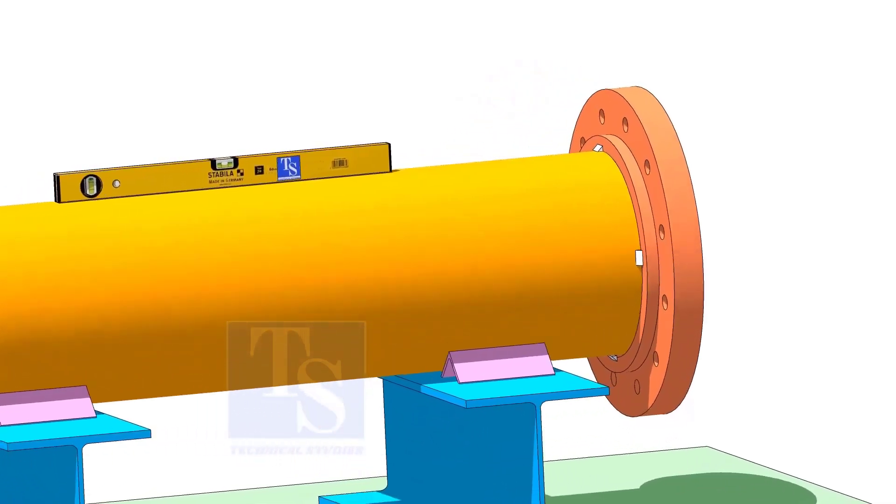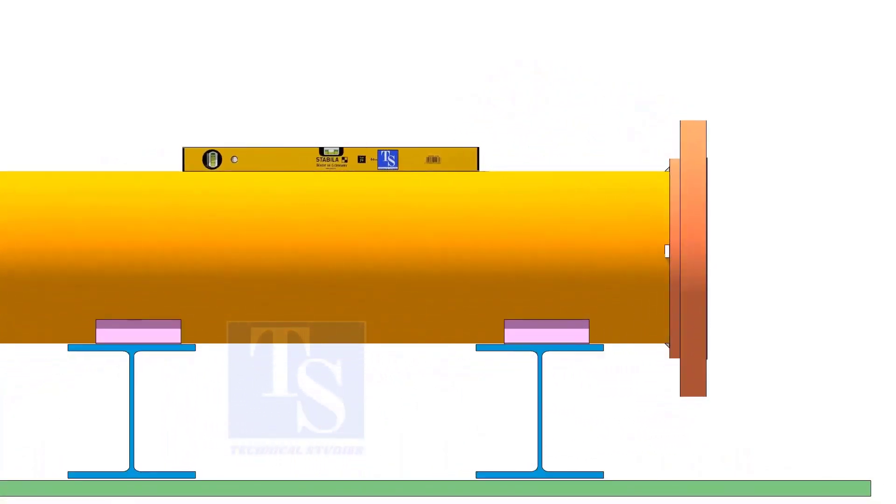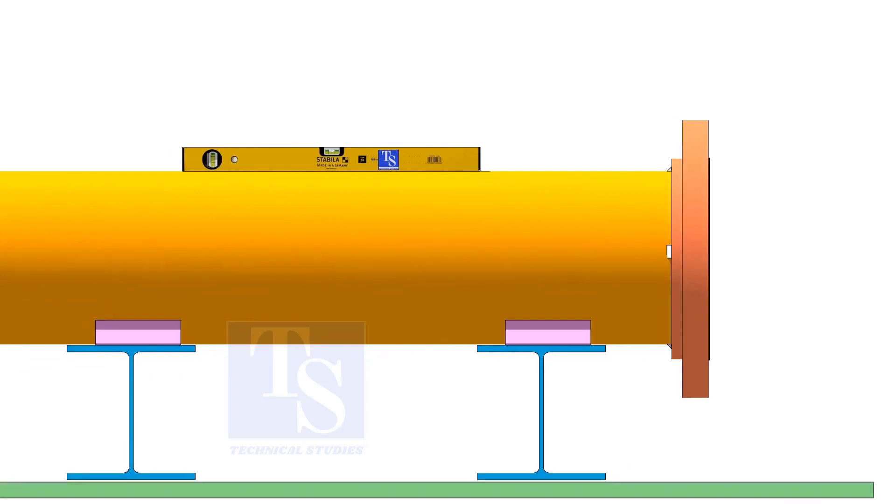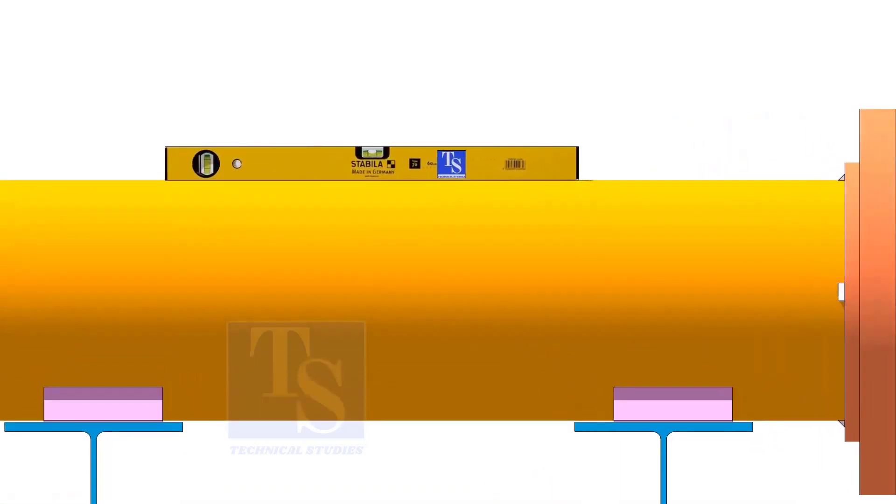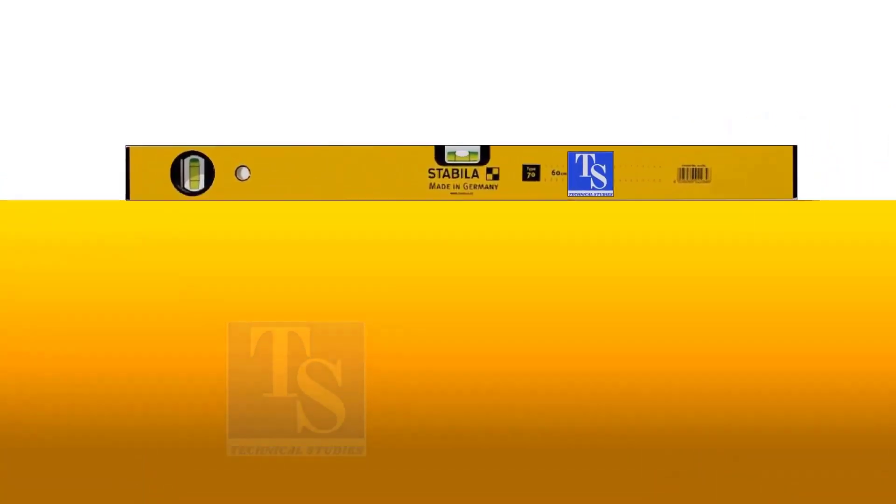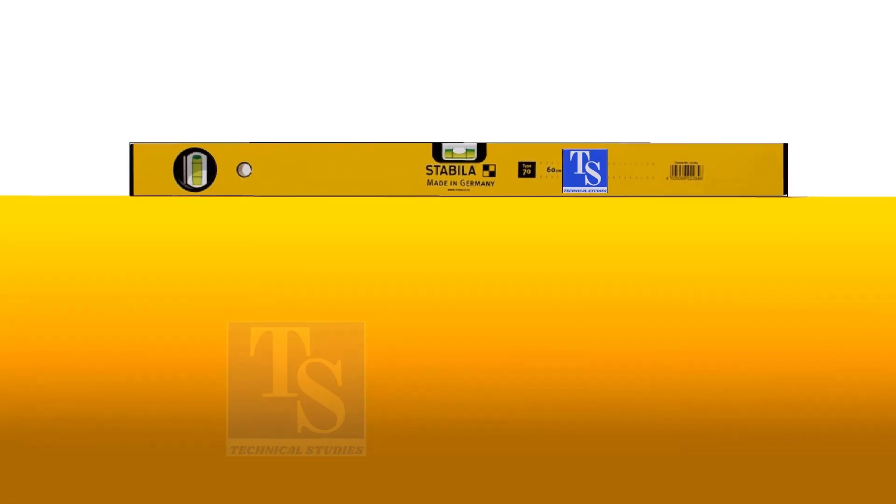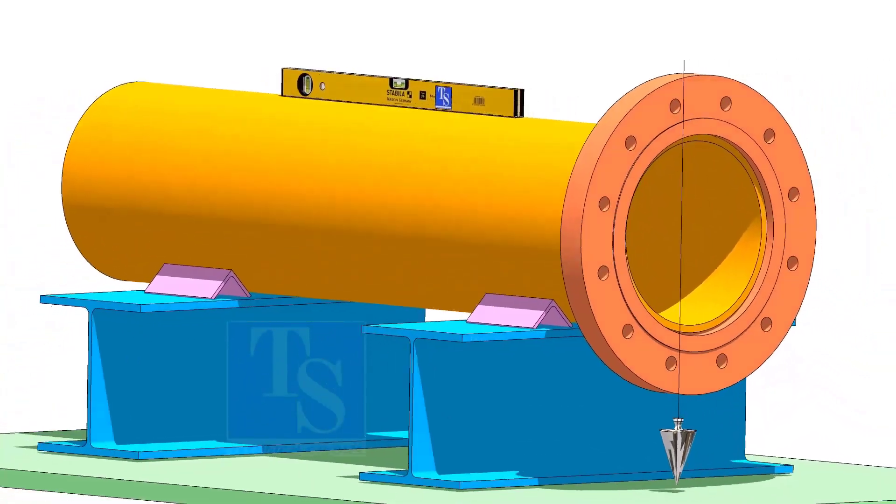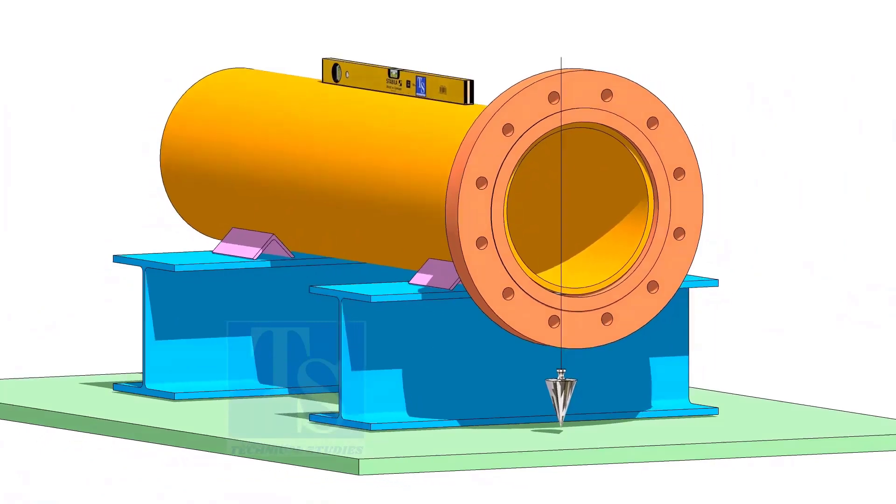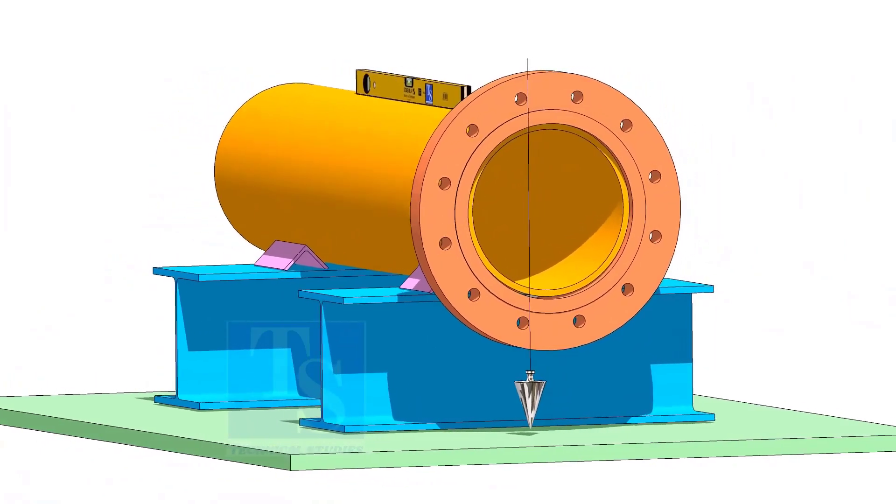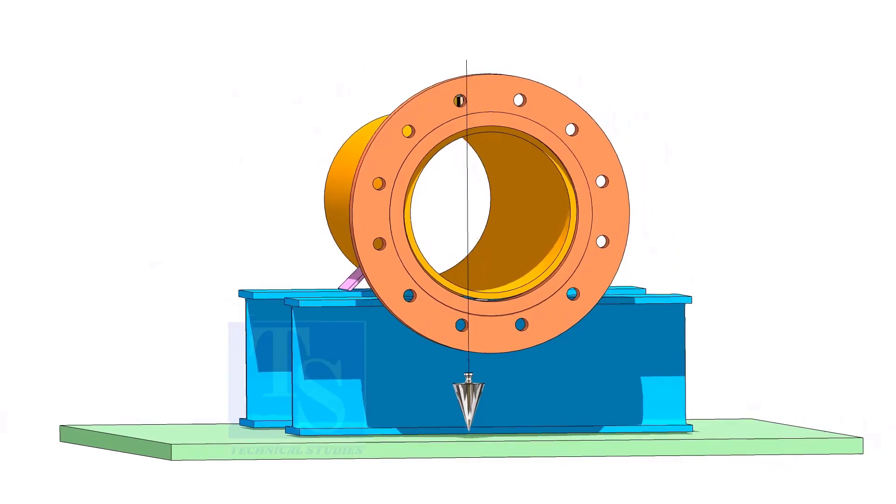After tacking the flange, correct the level of the pipe. Correct the plumbness of the flange and put proper packing on both sides of the pipe.